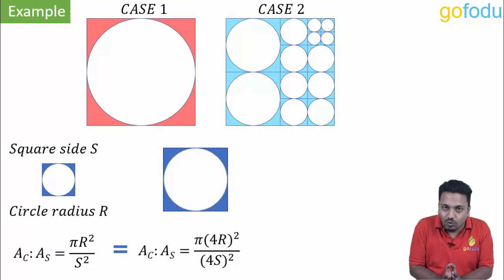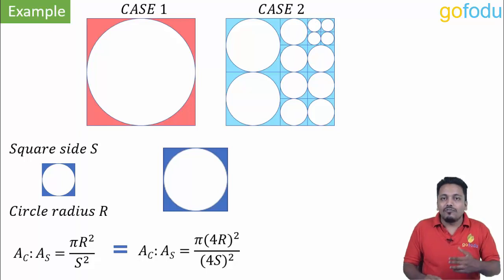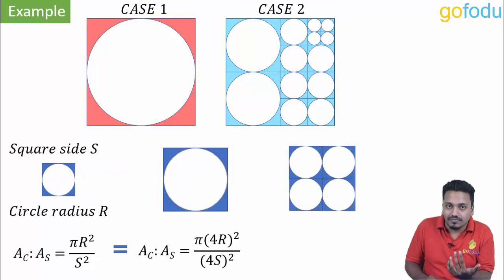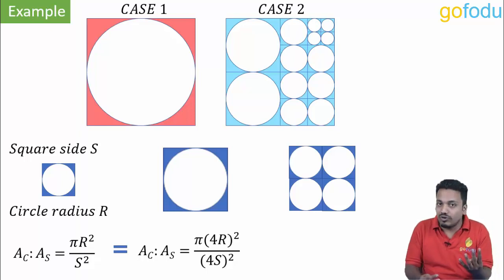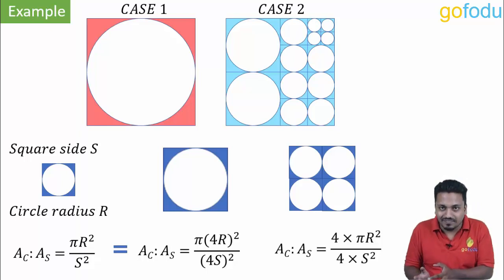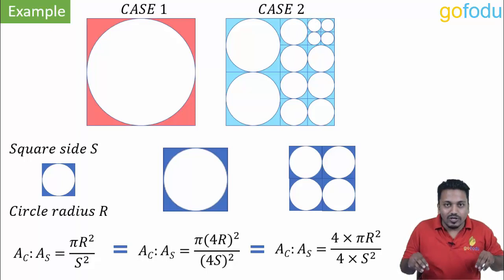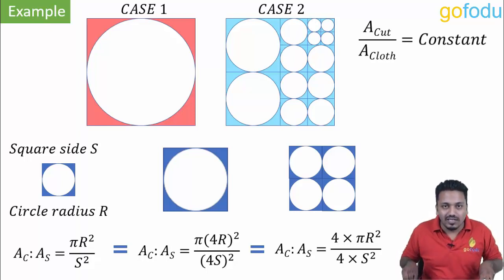So this was our first case of cloth and a bigger circle. Now if I take this smaller figure multiple times, let's say four times, the area of circle and square will also become four times because we have four circles and four squares. So in overall ratio of areas, four and four will get cancelled and the ratio will remain the same. So ratio in both cases is same. Area of cut upon area of whole cloth is a constant. Area of circle upon area of whole cloth, that is area of square, this is constant.